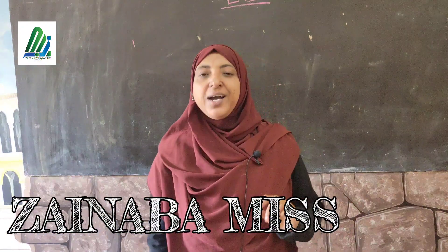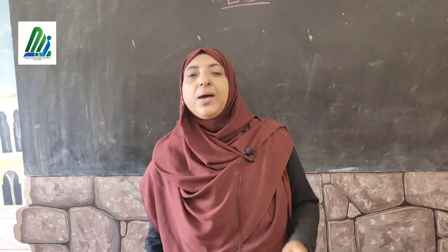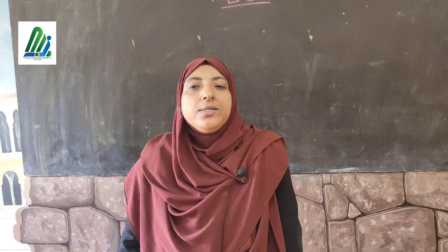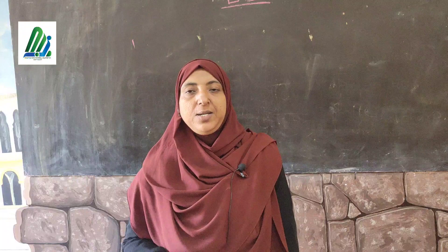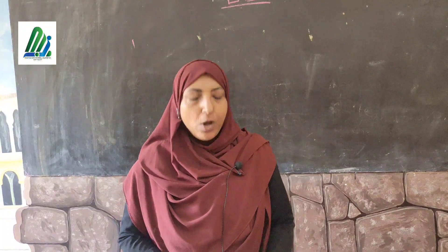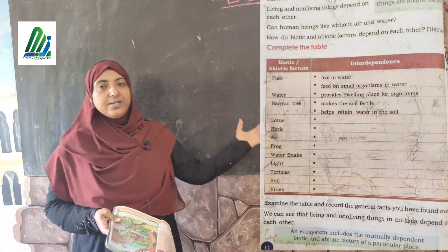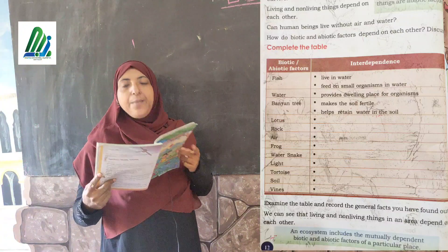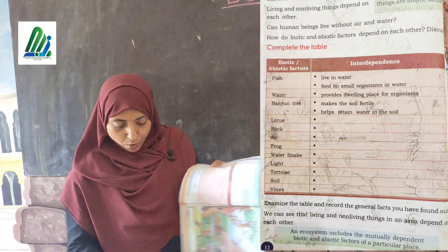Hello, good morning all. In the last class we discussed what are abiotic things and what are biotic things. Today we are going to study the inter-relationship or the mutual relationship of these two things, that means biotic things and abiotic things. All of you look at your textbook page number 12. You can see biotic and abiotic factors in the first column and second column, and their interdependence.